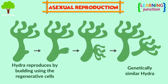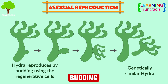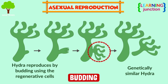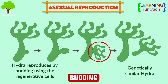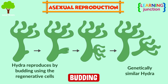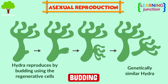An example of binary fission is the amoeba. Budding: a small bud-like outgrowth gives rise to a new individual. The outgrowth remains attached to the organism until it's fully developed, then it detaches itself and lives as an individual organism. An example is hydra.